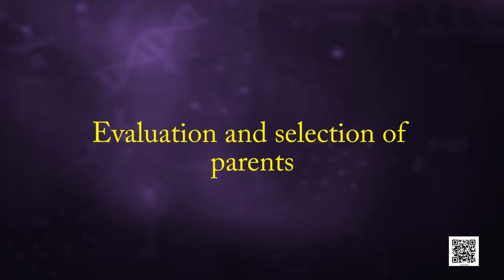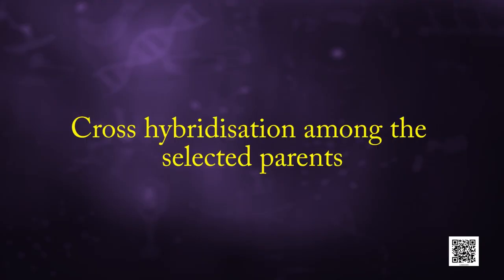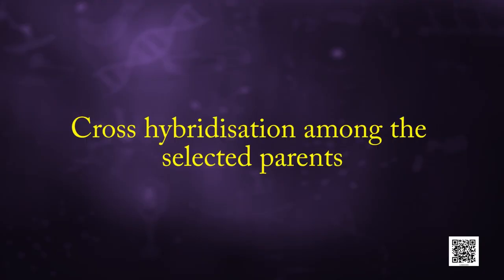Second, evaluation and selection of parents. The germplasm is evaluated to identify plants with desirable combination of characters. The selected plants are multiplied and used in the process of hybridization. Third, cross hybridization among the selected parents.